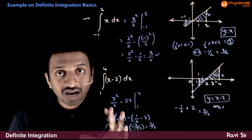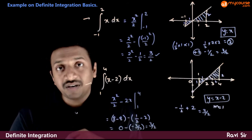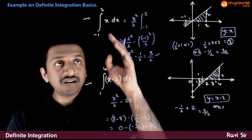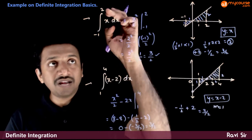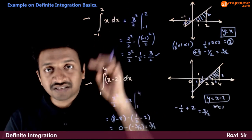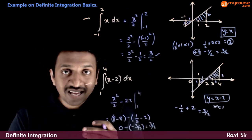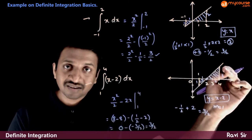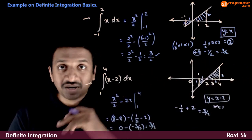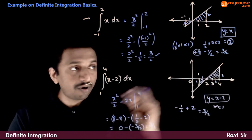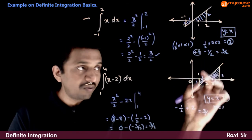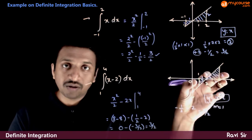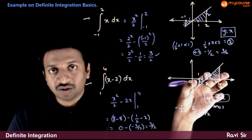I hope you have seen how this geometrical interpretation is working. The geometrical interpretation of the integration of f(x) dx from a to b is the area bounded by the curve and the x-axis — the algebraic sum of all the areas bounded by the curve with the x-axis between x equal to a and x equal to b.